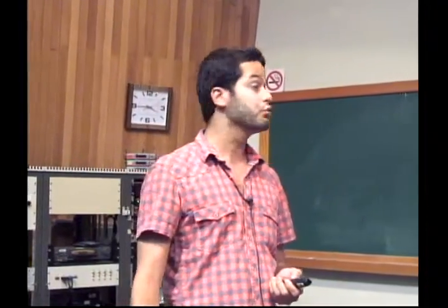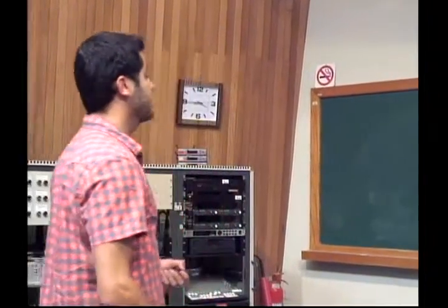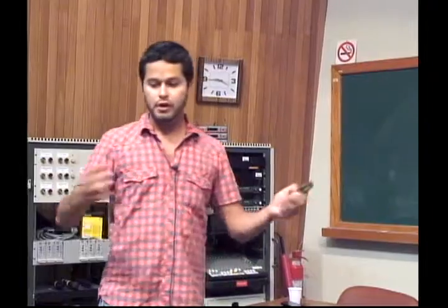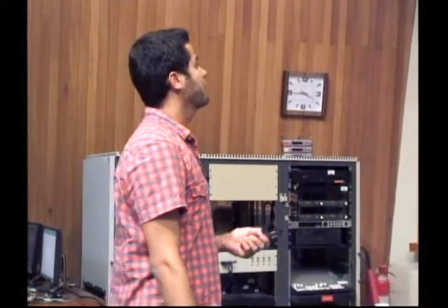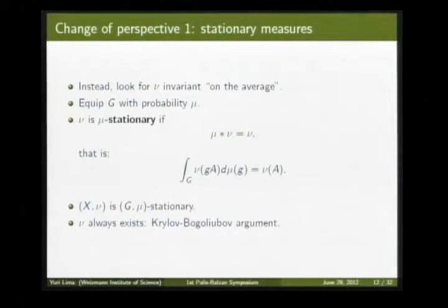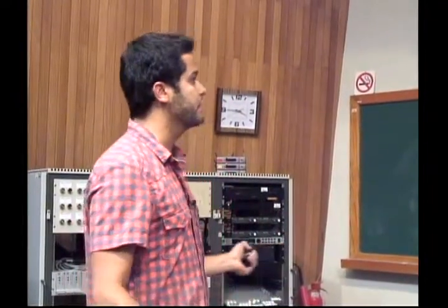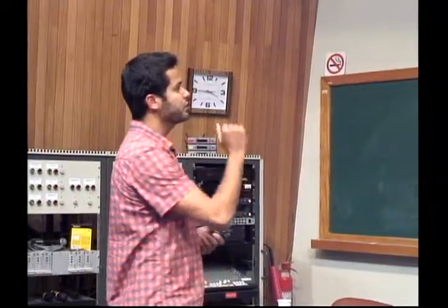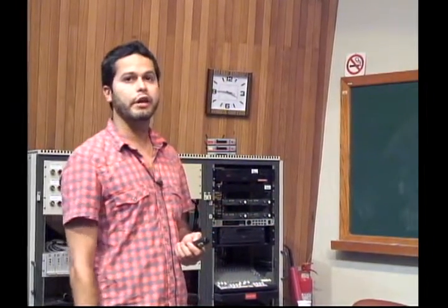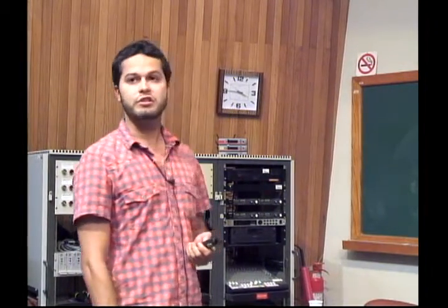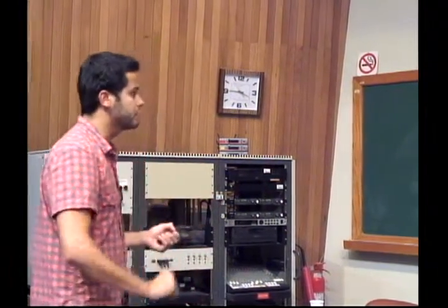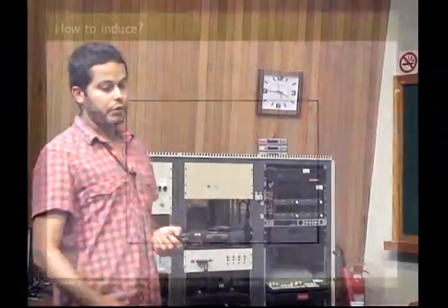This is the first change of perspective: we change from invariant measures to stationary measures. I should note that just as in the classical setup, a stationary measure always exists — you can apply a Krylov–Bogoliubov argument with respect to the convolution with μ to prove that ν always exists. These measures were first introduced in ergodic theory by Furstenberg in his study of harmonic functions on semisimple groups.